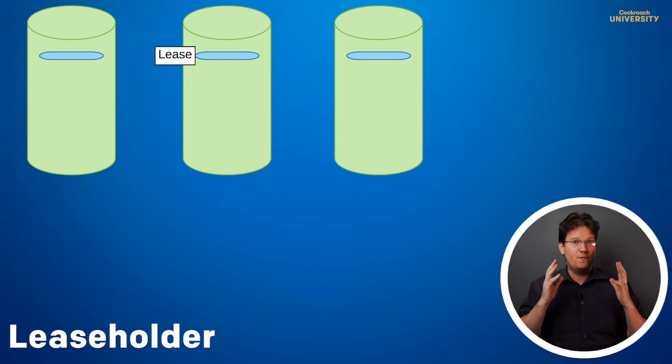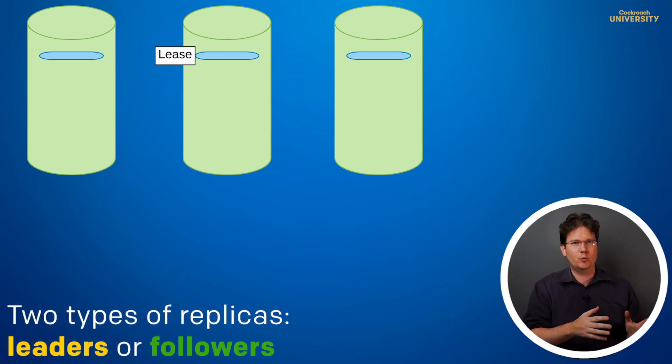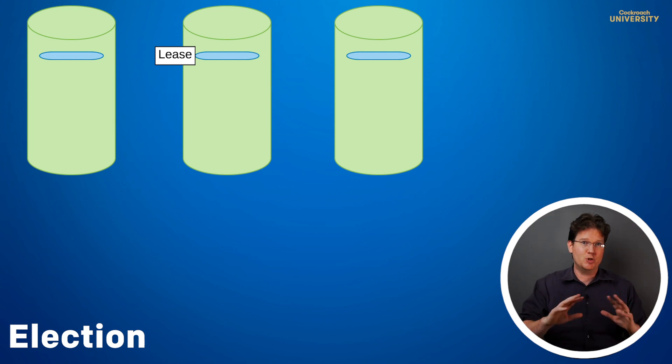Now let's talk about Raft. The first thing to know about Raft is that replicas are either leaders or followers. Leaders coordinate the distributed write process while followers assist. If a follower doesn't see a heartbeat from a leader, it'll get a randomized timeout, declare itself a candidate, and call for an election. A majority vote makes it a leader. The process takes seconds.